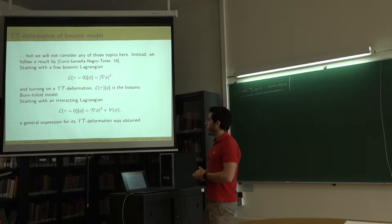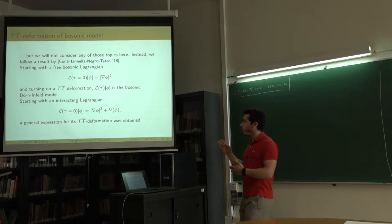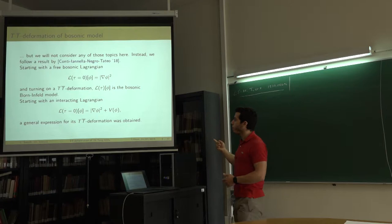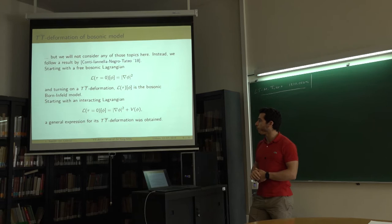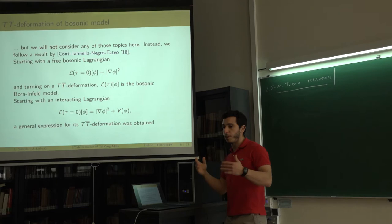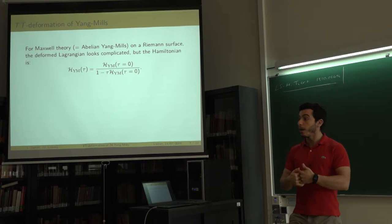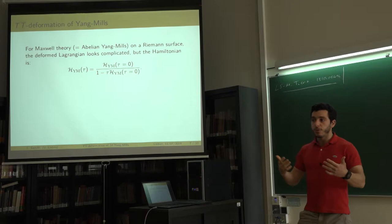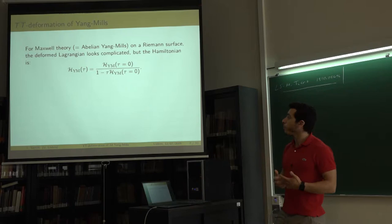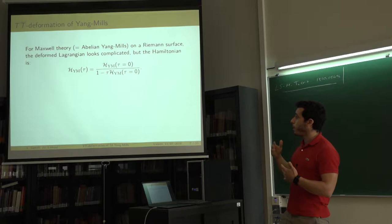If we start with an interacting Lagrangian including a potential without derivatives, we can find a general expression for the TT-bar deformed Lagrangian — a somewhat complicated but completely explicit expression. They also developed this for Maxwell theory, i.e., the Abelian Yang-Mills theory on Riemann surfaces, and found the explicit formula for the deformed Lagrangian. Though the Lagrangian formula is cumbersome, the Hamiltonian has a really simple transformation.